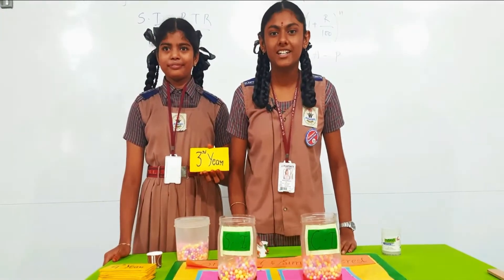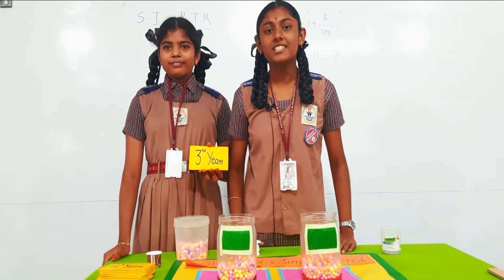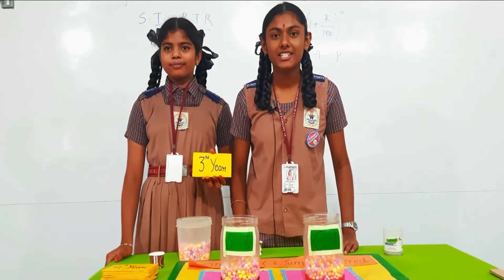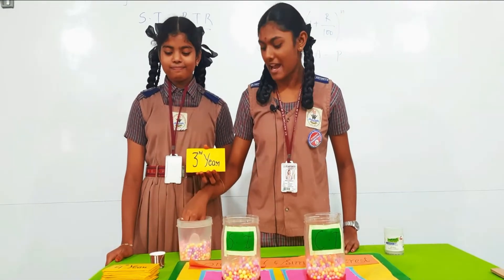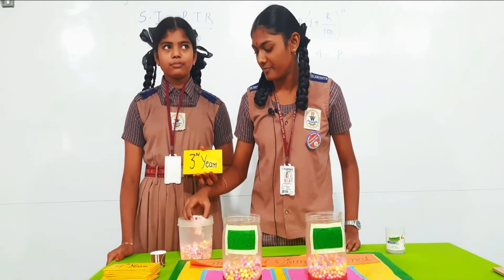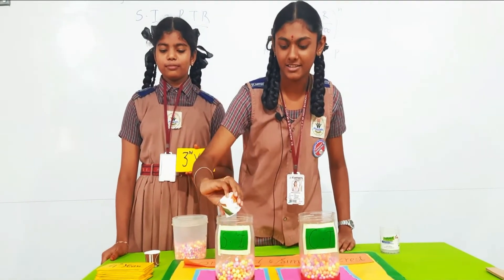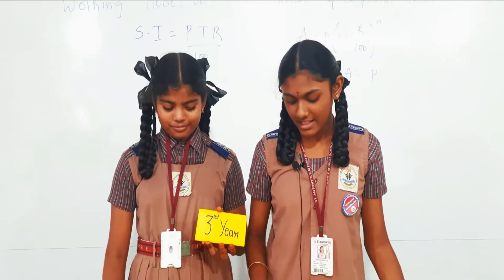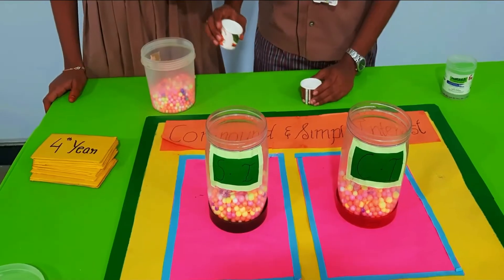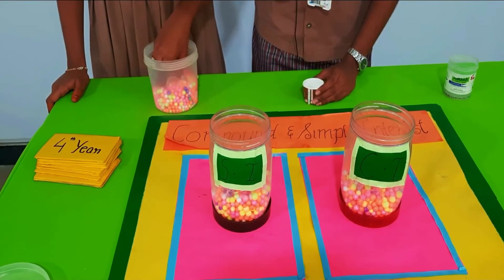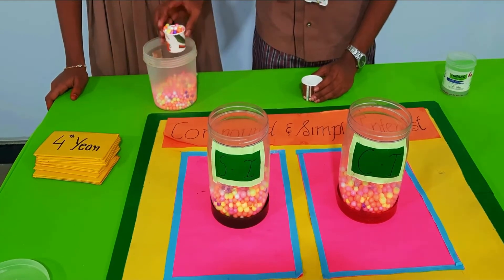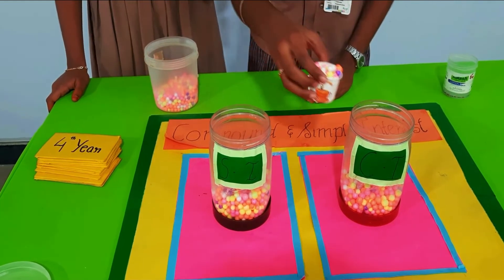Now it is the third year. Since the rate of interest is the same, I am adding 1 cup in the simple interest. For the third year, the compound interest principal has changed, so I am taking 1 and 1 cup of bubbles in the cup of interest.